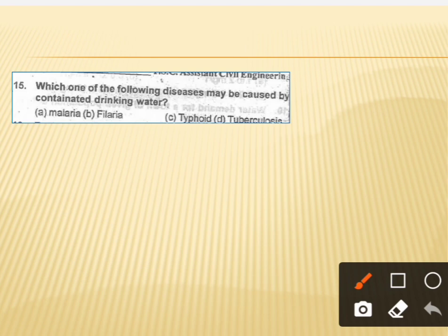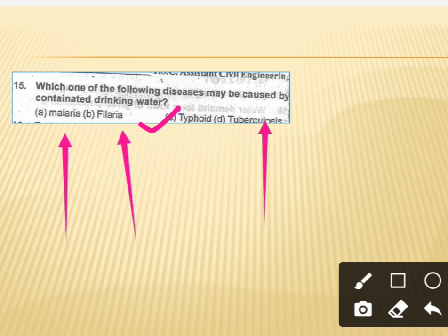This is the last question of the video. It asks which of the following diseases may be caused by contaminated drinking water. The correct answer is option C, which is typhoid. The other options — malaria, filaria, and tuberculosis — are not waterborne diseases in the same classification.